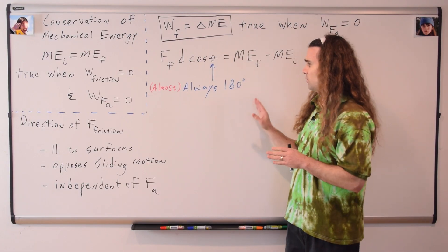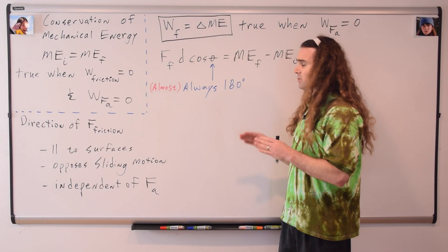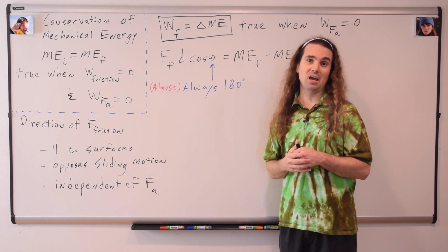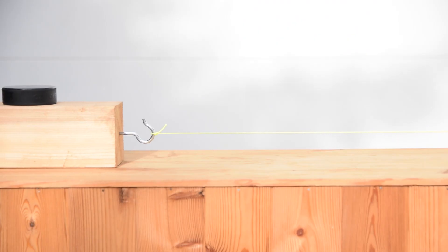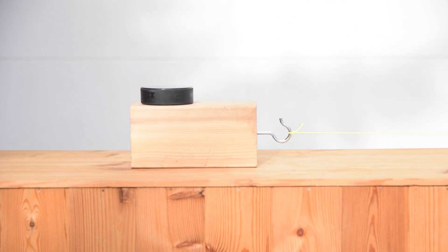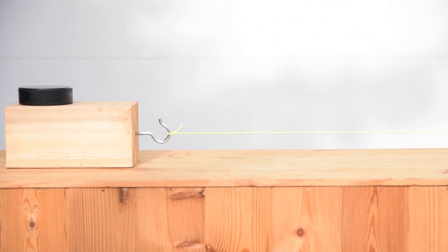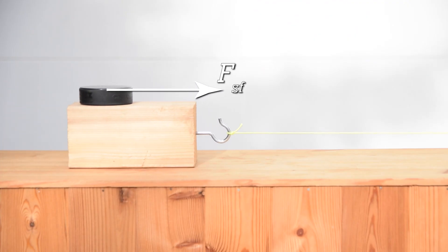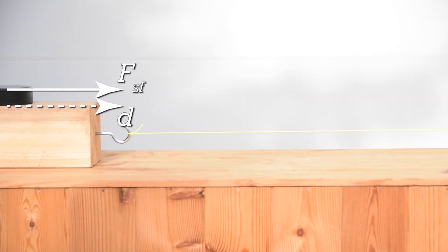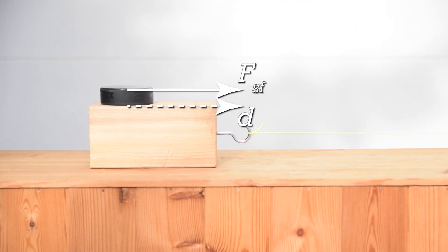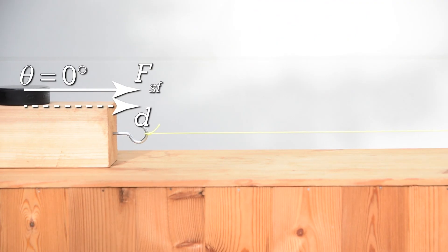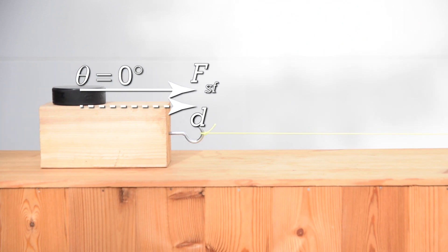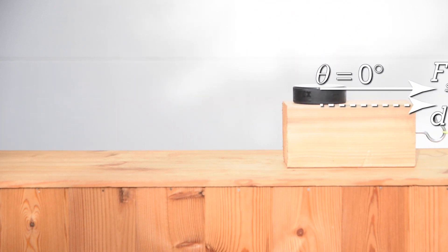Now, I do want to be careful with this 'always,' because it actually isn't quite always true. There are a few examples where the force of friction is actually in the same direction the object is moving. One example is if a hockey puck is on top of a block of wood. As we pull the block to the right, the hockey puck is accelerated to the right by the force of friction. In this case, the force of friction acting on the hockey puck and the displacement of the hockey puck are both in the same direction. Therefore, the angle in the work due to friction equation actually works out to be zero degrees. This is a bit of an unusual situation; however, I did want to mention it, because as you get further into your physics careers, it will come up more and more often.